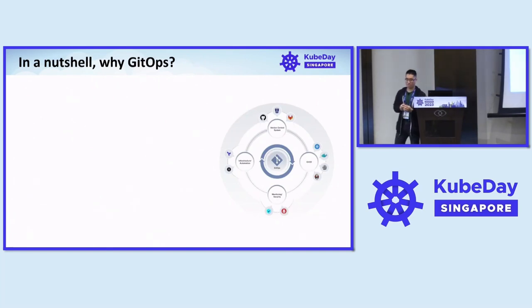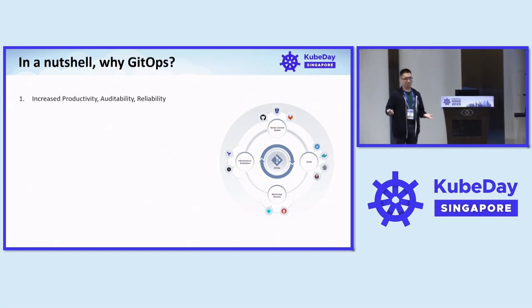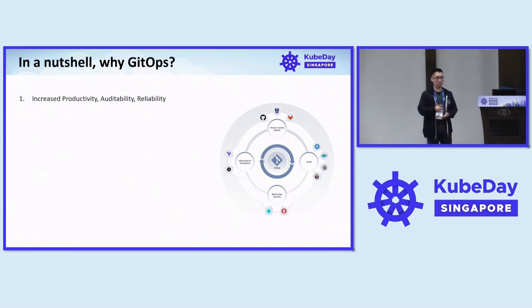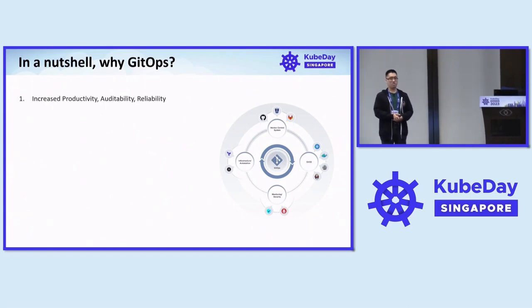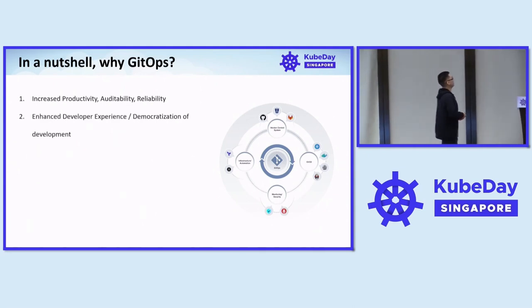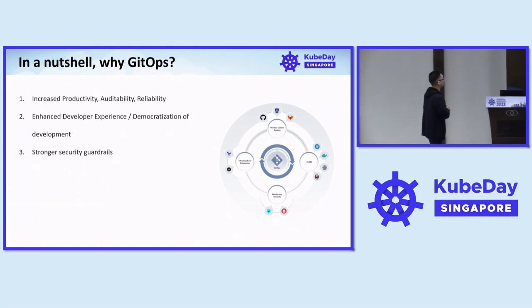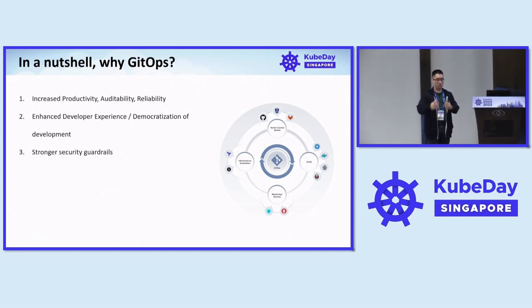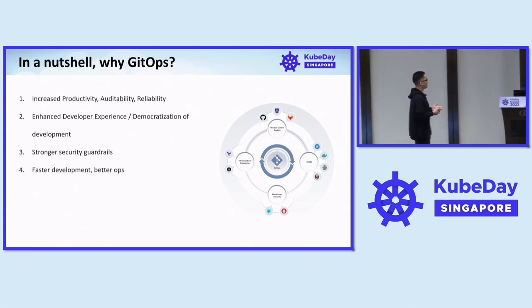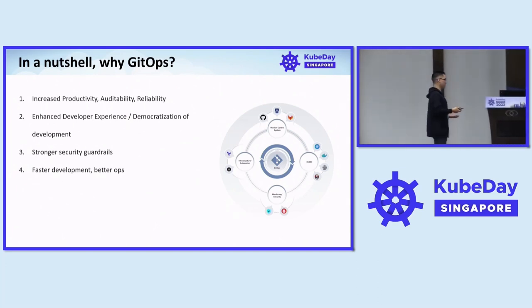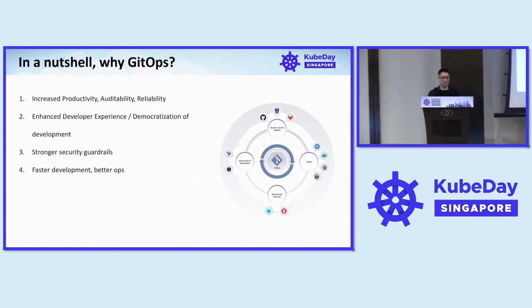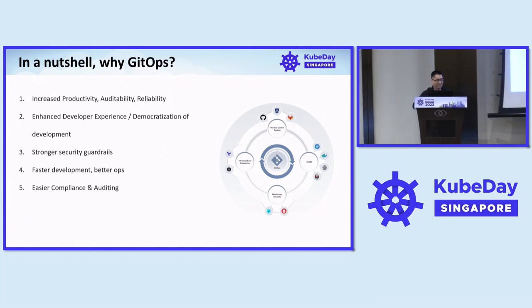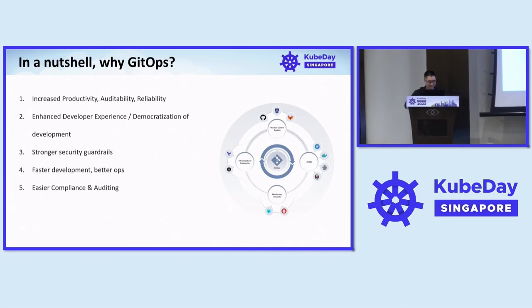In a nutshell, why GitOps? This is a takeaway for your boss: increased productivity, auditability, and reliability — you can trace who, what, when. Any weird changes will be rolled back within 10 minutes. Very enhanced developer experience and democratization of development. Much stronger security guardrails — because you go through Git, you can restrict cluster access and just give juniors access to the Git repo instead. Faster development, better ops, everything in YAML — there's an inside joke that DevOps engineers are really just YAML engineers. And easy compliance and auditing because you can see all the commits. Thank you very much.